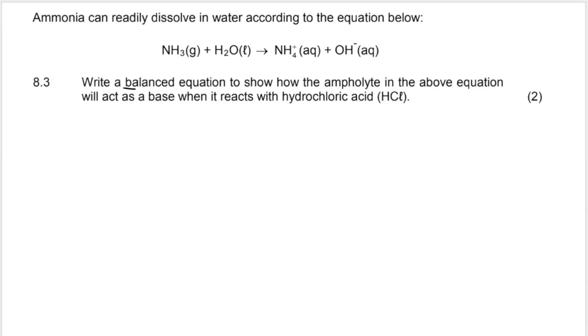8.3 says write a balanced equation, always balance your equations, to show how the ampholyte in the above equation will act as a base when it reacts with hydrochloric acid. So if you take a look at this equation, ammonia, as we know, is a weak base. Remember, bases are proton acceptors. And if you take a look at what's happening here, NH3 becomes NH4. How did it do that? It gained a proton, which means it accepted a proton, so it's a base. That means that in this reaction, H2O is an acid. It's always an acid-base reaction.